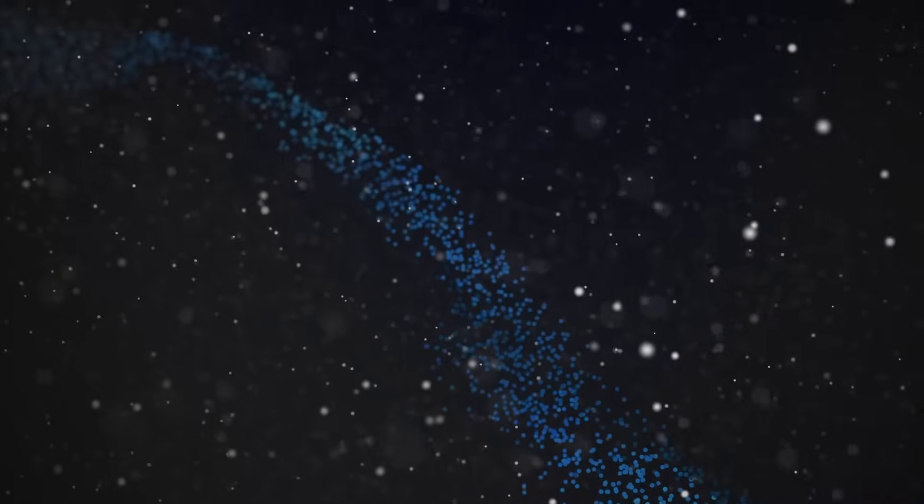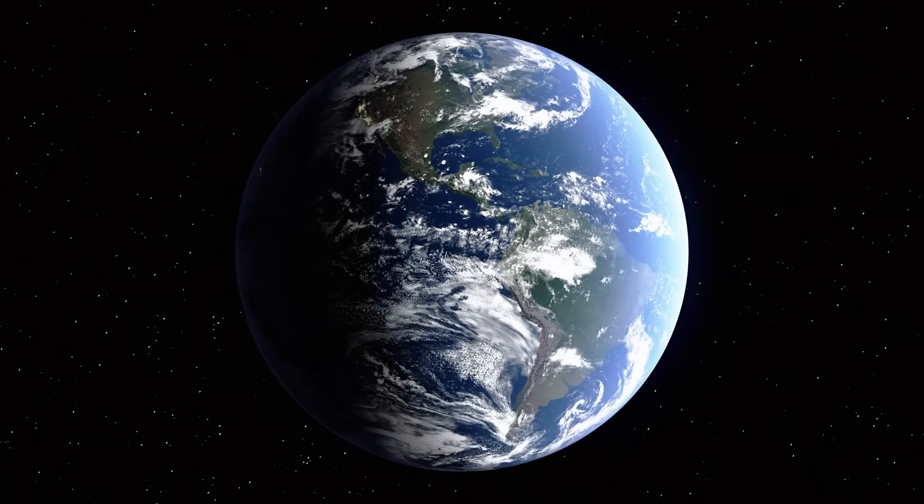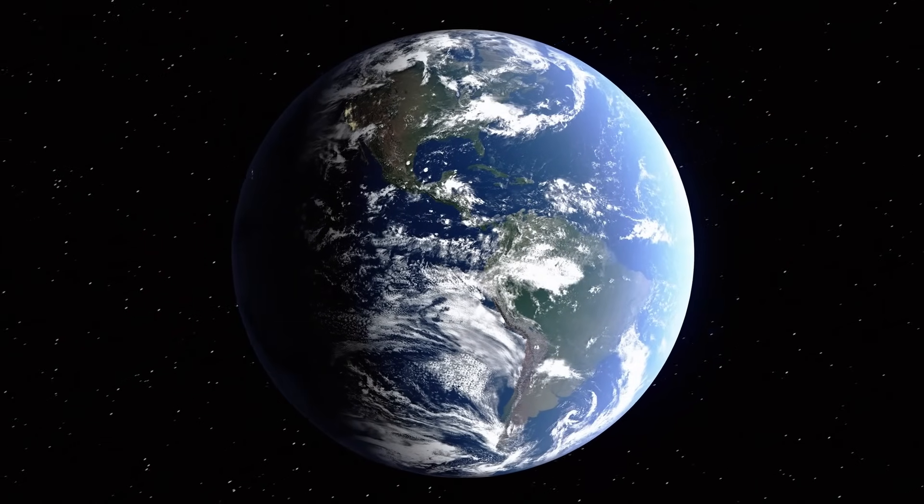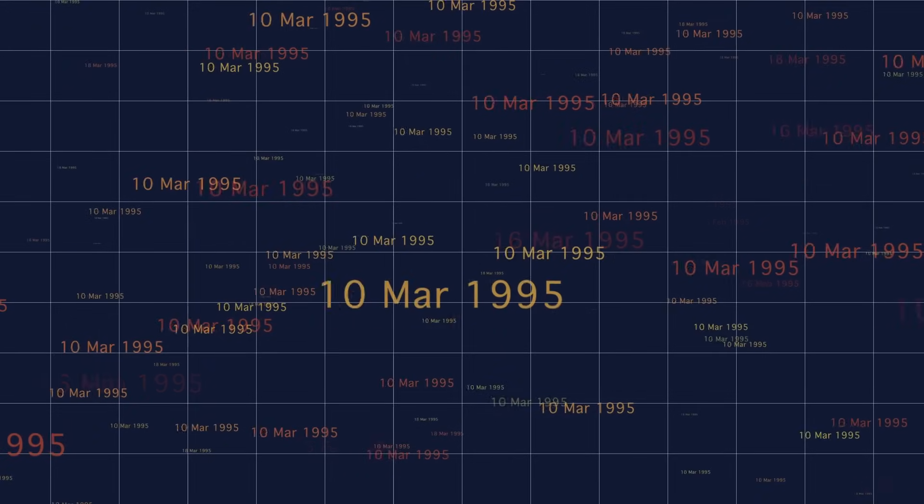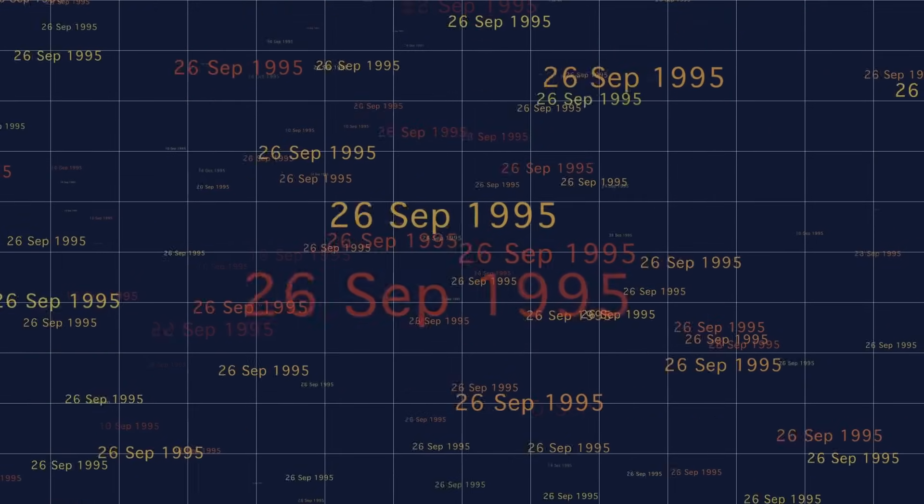So immense that if it were placed in our solar system, its surface would stretch far beyond the orbit of Mars, completely engulfing Mercury, Venus, Earth, and even the red planet itself. This staggering scale highlights the dramatic and powerful forces at work within it.